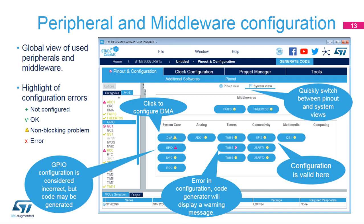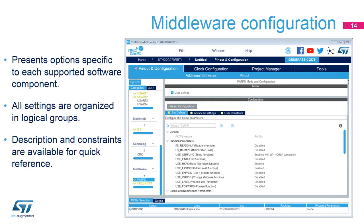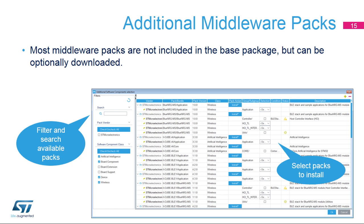To add more peripherals and components, return to the pinout tab. Each middleware software component has options that are different, but they are all presented in a similar fashion, giving easy access to initialization options and providing informative descriptions. The vast amount of middleware packs available for STM32 makes it impractical to distribute as a single package. Clicking on the Additional Softwares link in the Pinout and Configuration tab pops up a dialog window where most middleware packages available for the selected MCU can be found and installed.